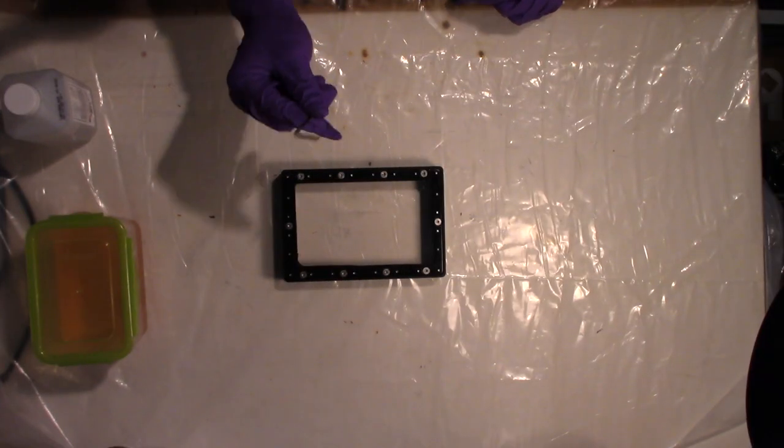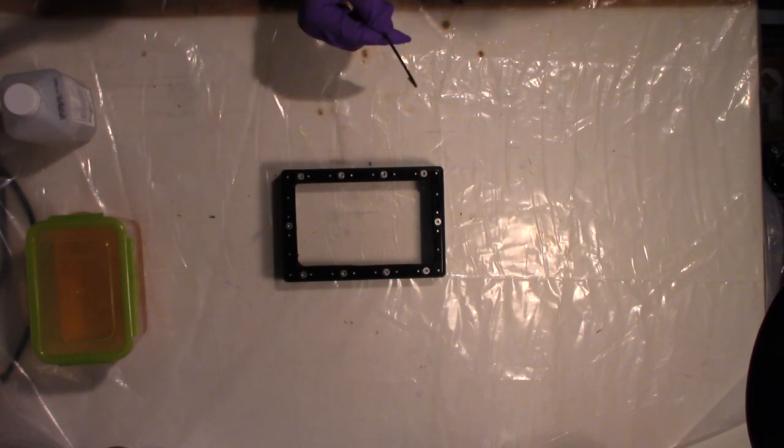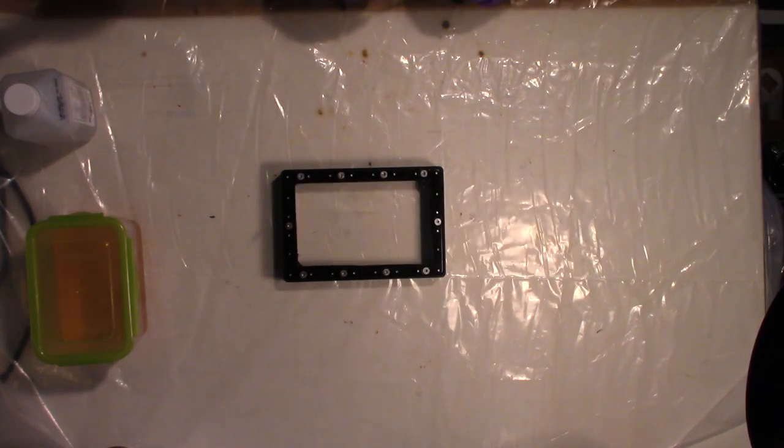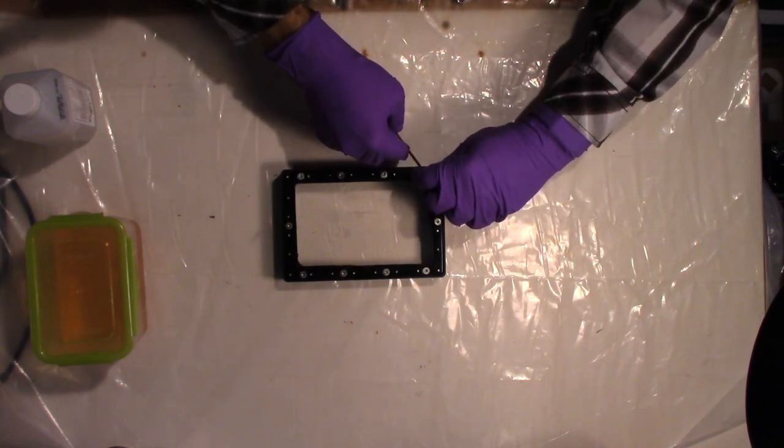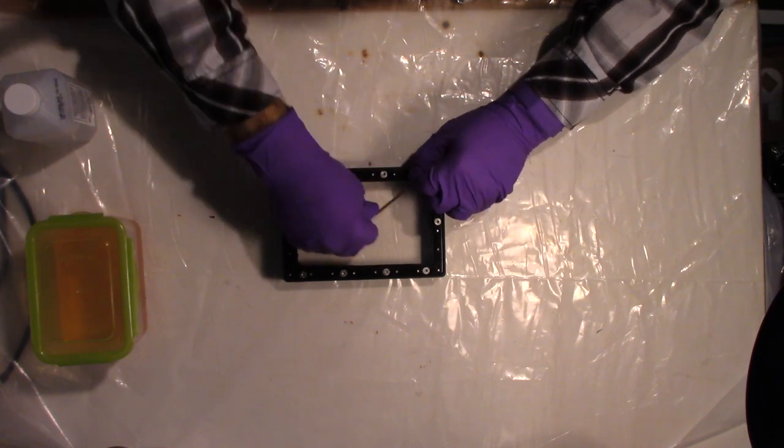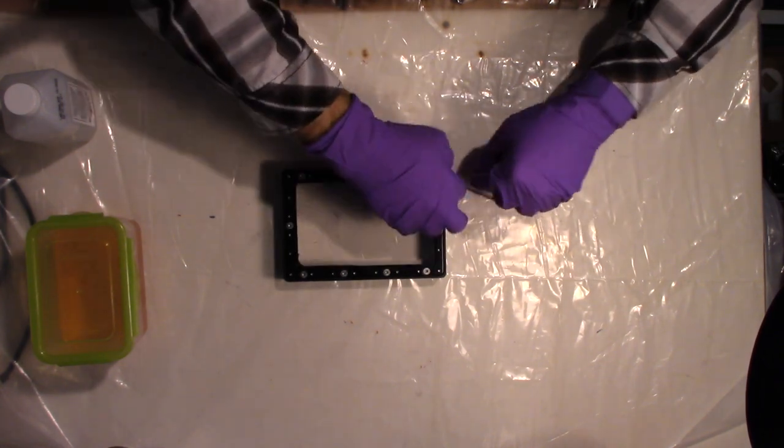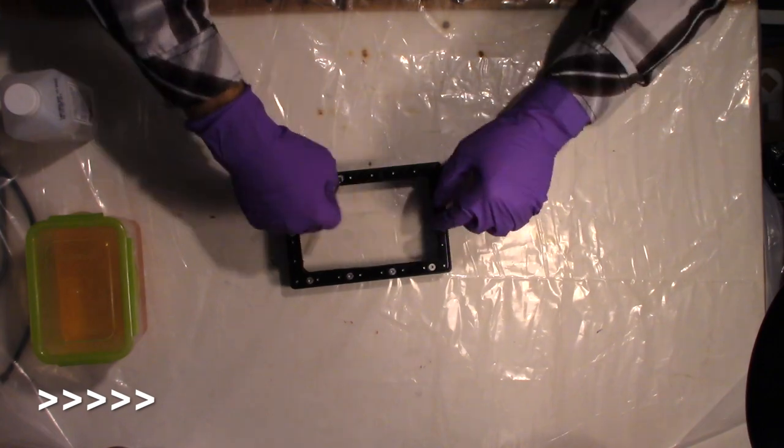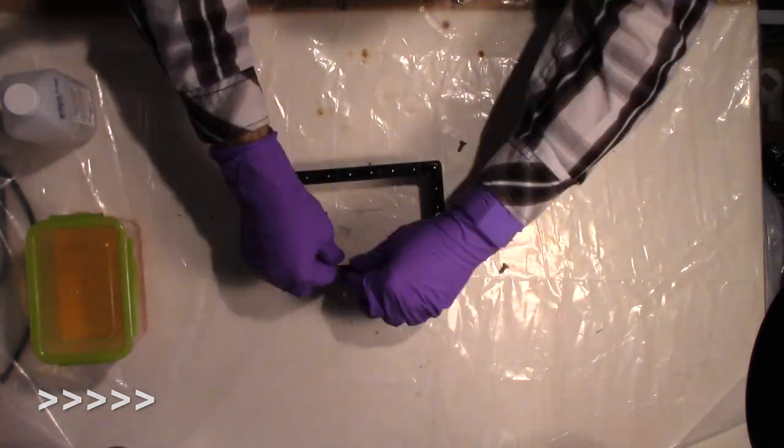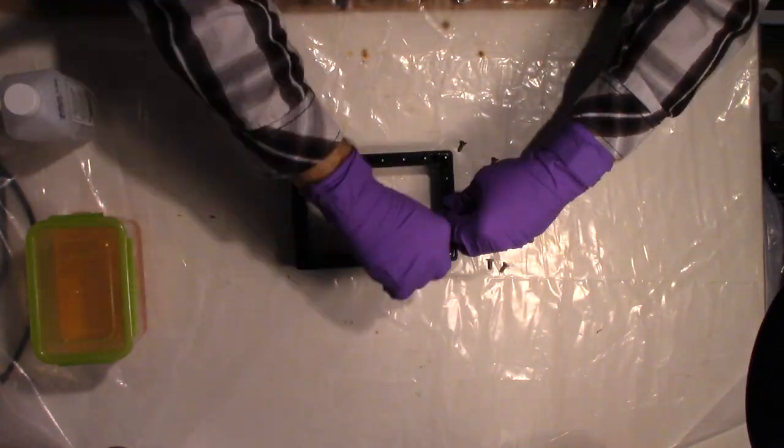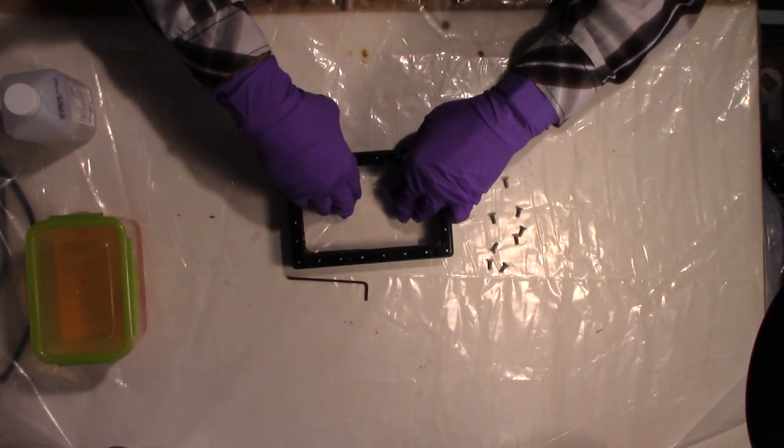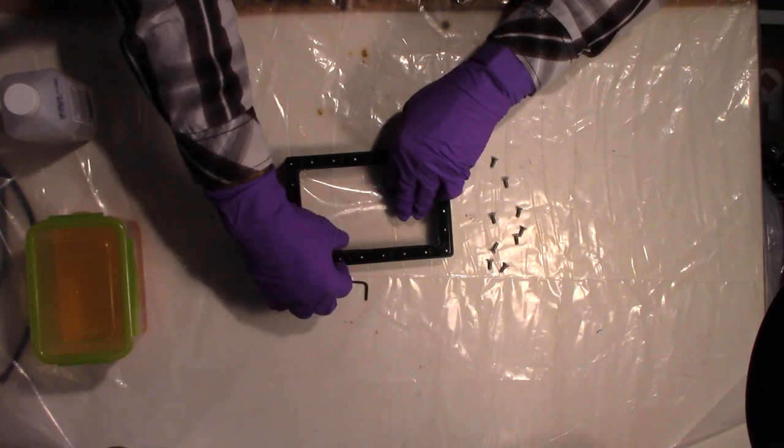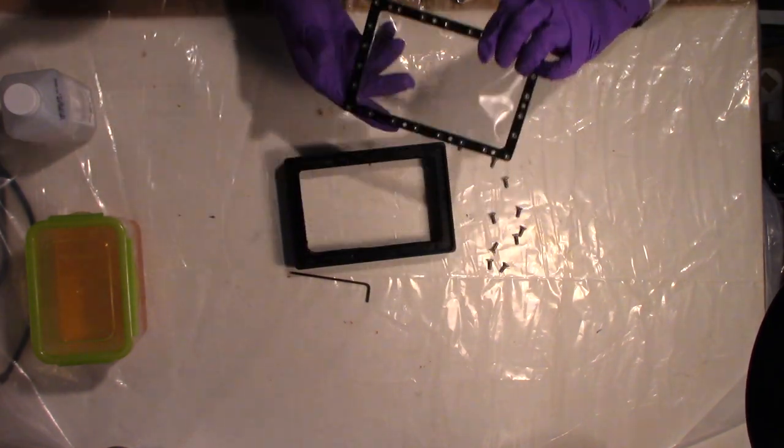All right, so we're going to start this project. You just need the Allen key. It was actually in with the screw packet. It's not the one that's actually for the leveling of the bed. It's actually its own connection. So the first thing we're going to do is take these off.